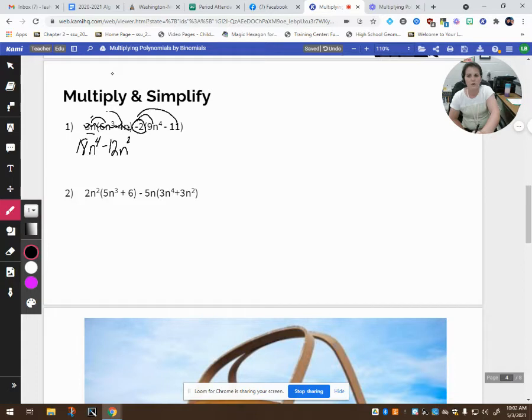So we're done with all this. We're moving on. We're distributing the negative 2 to what's inside this set of parentheses. So negative 2 times 9 is negative 18. There's no n out here, so we just keep it n to the fourth. Negative 2 times a negative 11. Watch out for those negatives. A negative times a negative makes it a positive 22.